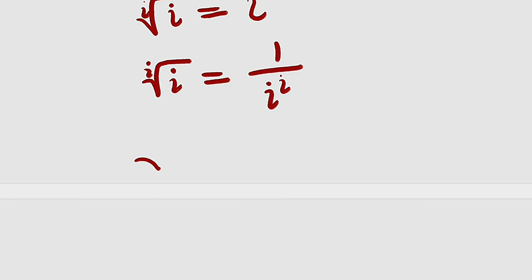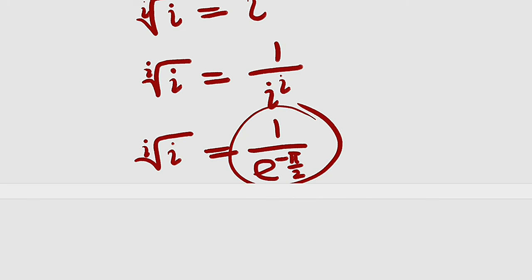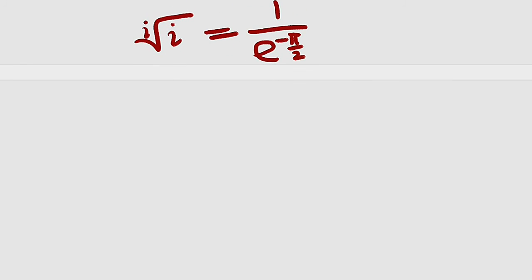So i root of i equals 1 divided by i to the power of i, which is e to the negative pi divided by 2. This is just the reciprocal, so we can make it e to the pi divided by 2. And finally, i to the root of i is e to the pi divided by 2.